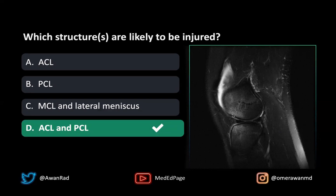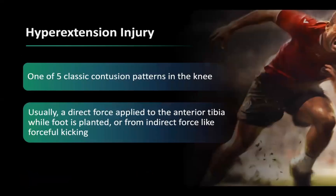When you have microtrabecular contusions or bone bruises along the anterior femur and anterior proximal tibia, it indicates that both the ACL and the PCL are injured. This is a hyperextension injury and one of five classic contusion or bone marrow edema patterns in the knee. The key is that bone marrow edema patterns always predict the soft tissue structure that's injured.